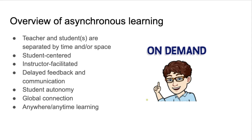A big piece of both the MOOSE module and asynchronous learning in general is student autonomy — really the voice and choice, opportunities to pursue their learning in a variety of different ways. That is very important. You get that student buy-in when they're not present in a classroom space with a teacher right there walking along with them. That's why student autonomy is so important. As an instructor, think about what opportunities you can craft for students and what choices you can make obvious to them.